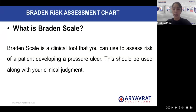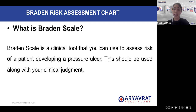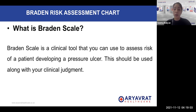As I have been talking about the Braden's scale and the Braden risk assessment chart, we need to understand what exactly is Braden's scale, how do we use it, what are the things which are there in the Braden's scale, and why do we use it. We will try to answer all these queries as we go along in the presentation. So let's start: Braden's scale is a clinical tool that you can use to assess the risk of a patient developing a pressure ulcer.